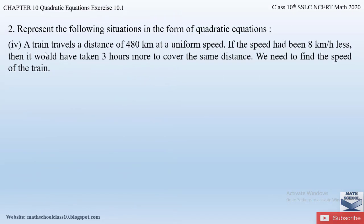The fourth part of question 2: a train travels a distance of 480 kilometres at a uniform speed. If the speed had been 8 kilometres per hour less, it would have taken 3 hours more to cover the same distance. We need to find the speed of the train. A uniform speed means a constant speed. Since the speed is reduced, the time taken to cover the same distance increases.